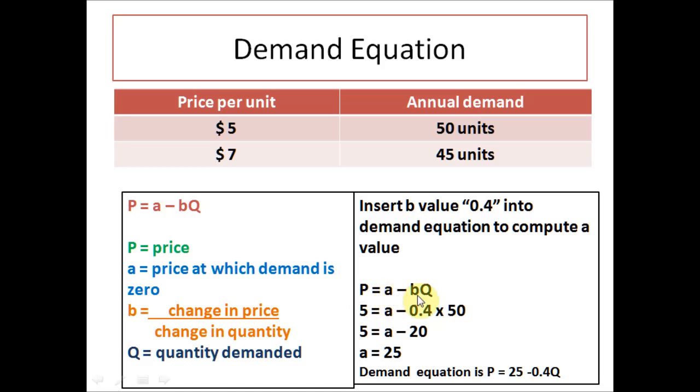P equals a minus bQ. P is the price. So we will insert the current price at 5 and Q is the quantity demanded. So for $5 per unit price, we have 50 units. So Q is 50.